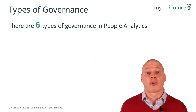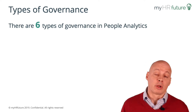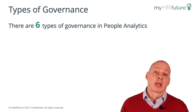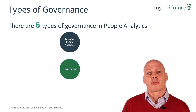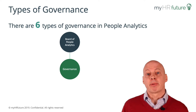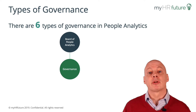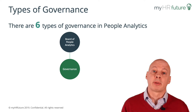There are six types of governance for people analytics. The first one — I'll call this the board of people analytics — is the overseeing governance model and structure for the organization and function. The board of people analytics looks at the overall mission, purpose, and goals of the organization, and what needs to be delivered.